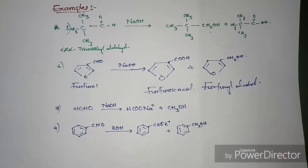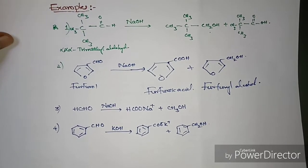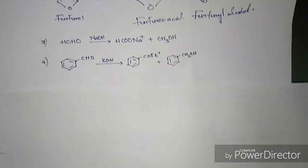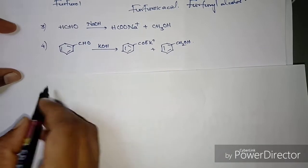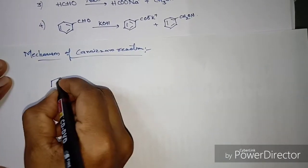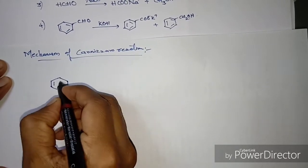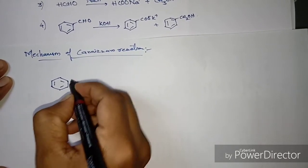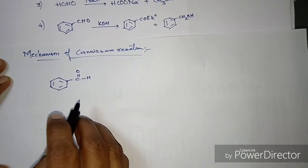I'm showing two examples here — you can make a note of these. I'll explain how these products arise by working through one of the examples with the full mechanism. I'm choosing the fourth example, which uses benzaldehyde with its aldehyde functional group.